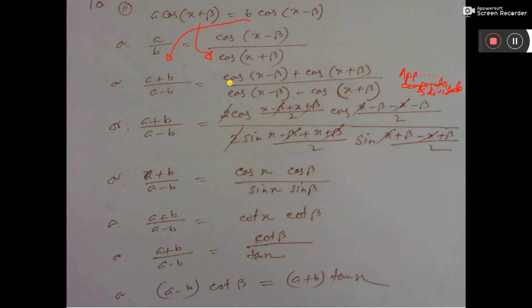So this plus this by this minus this written here. Now right side, you have applied cos C plus cos D formula, that is 2 cos(C+D)/2 into cos(C-D)/2. Then this beta beta cancel, x x cancel.